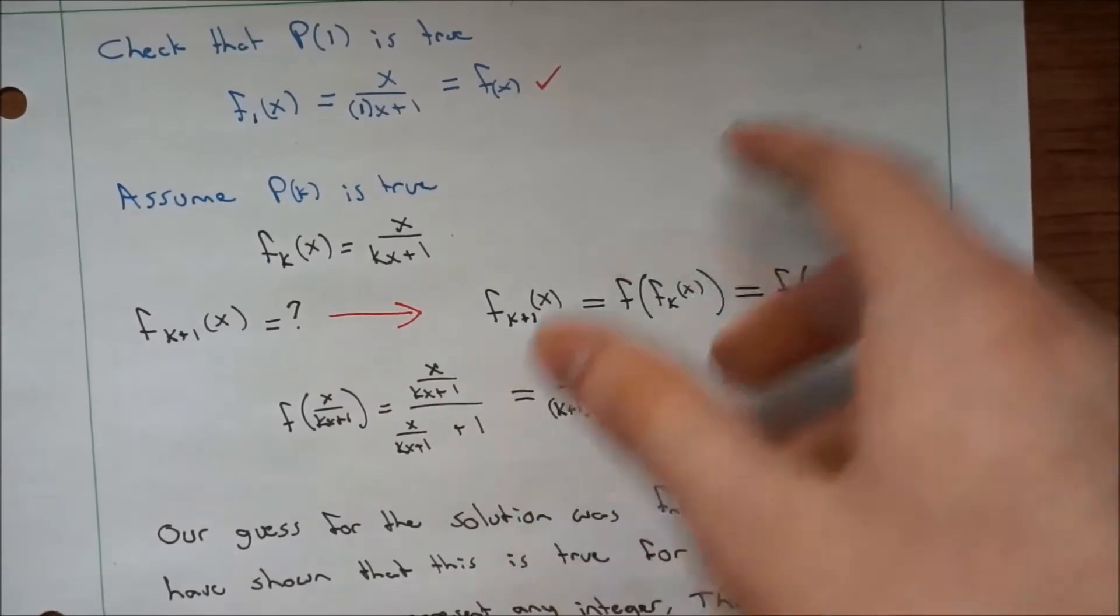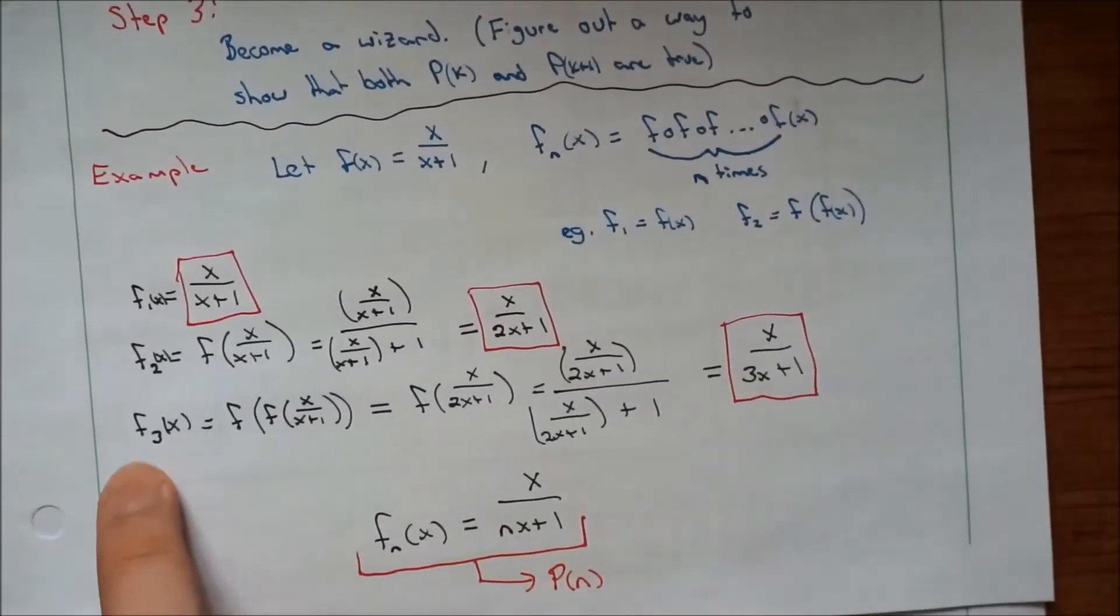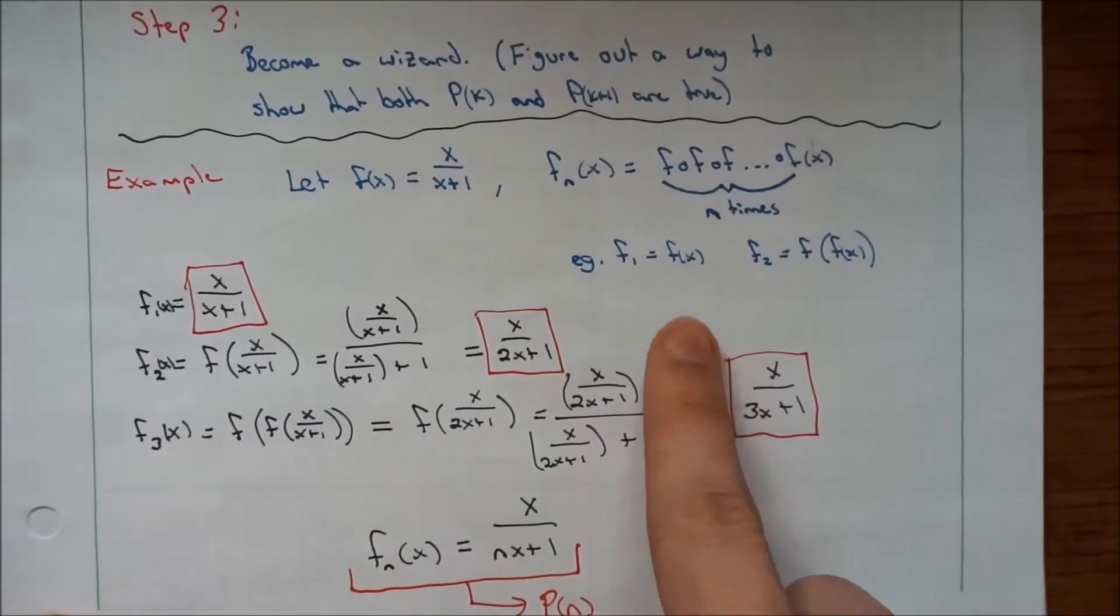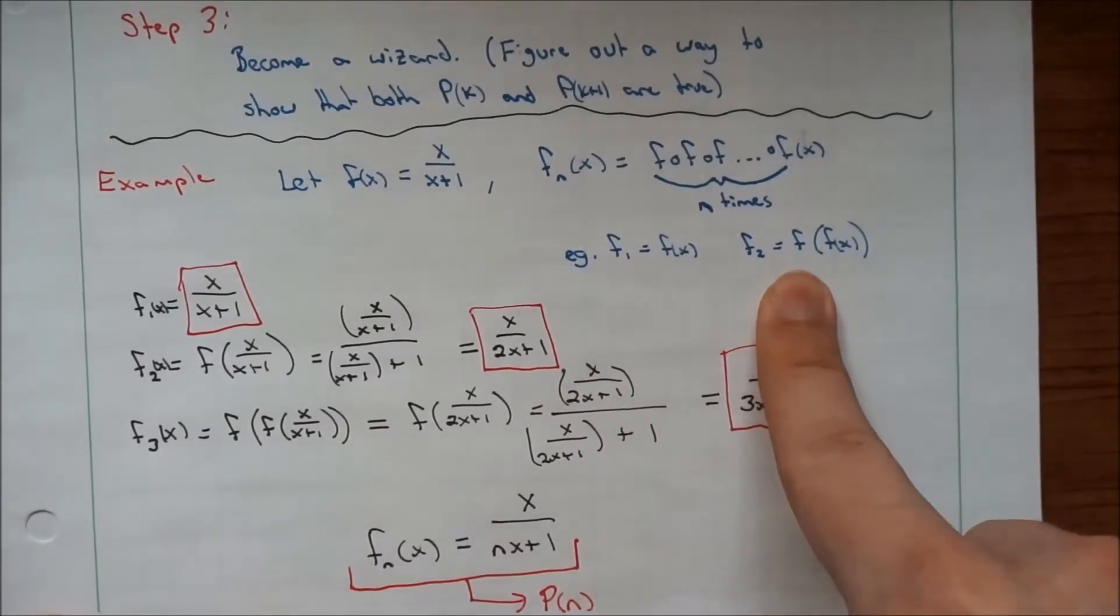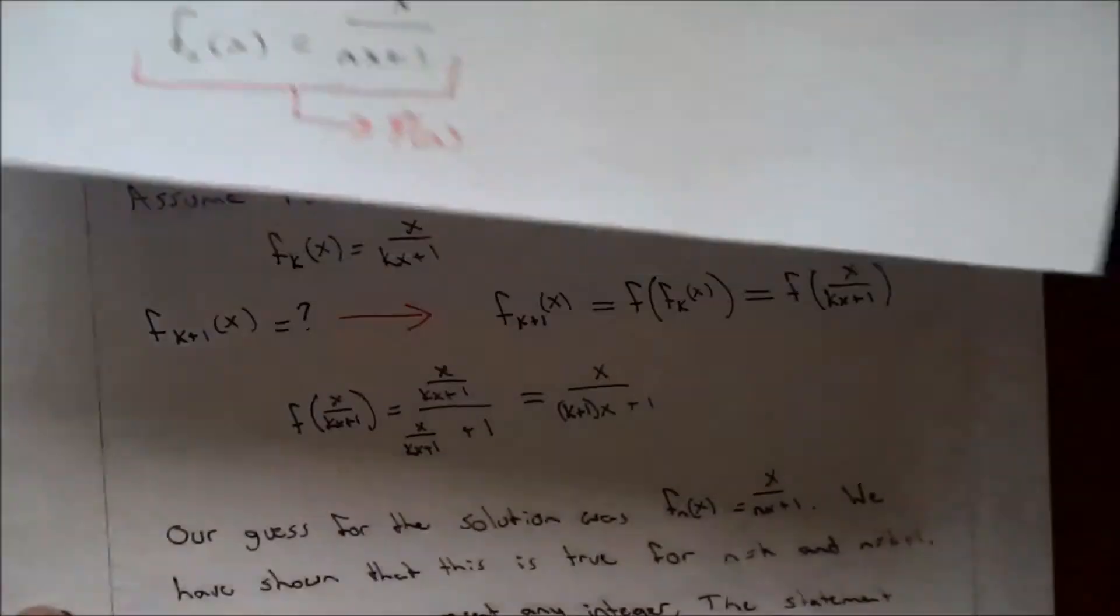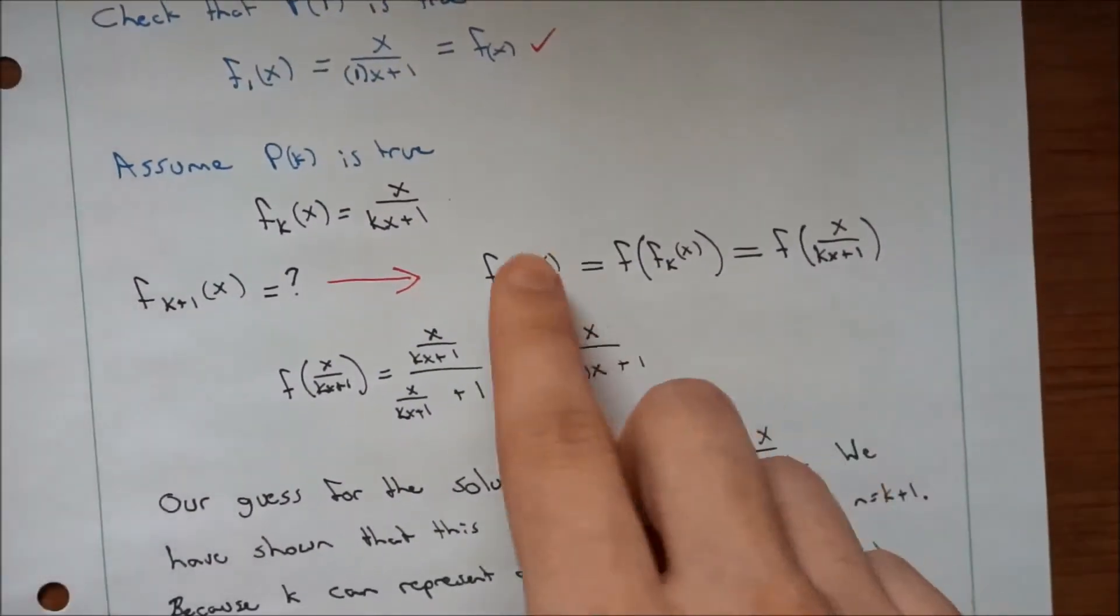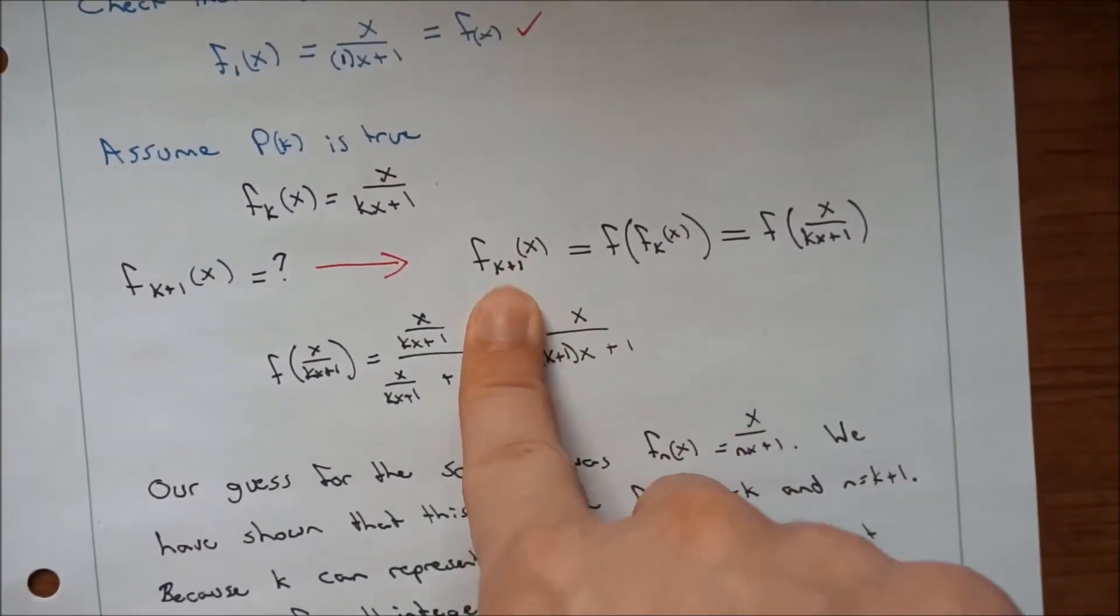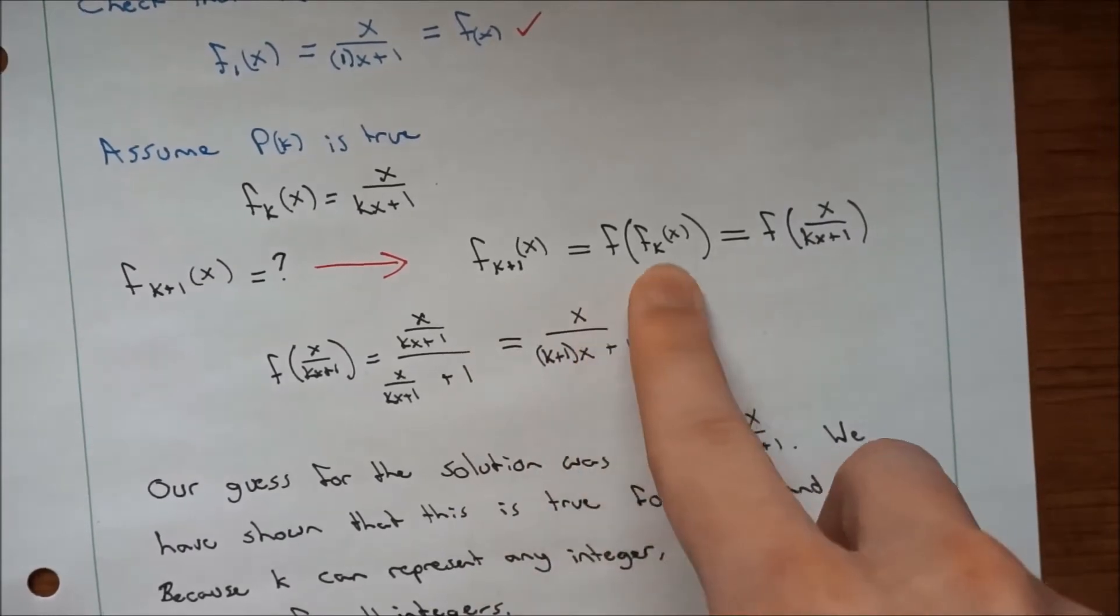Well, remember we said before, f_3(x) was just f of f_2(x). So, f_{k+1}(x) equals f of f_k(x).